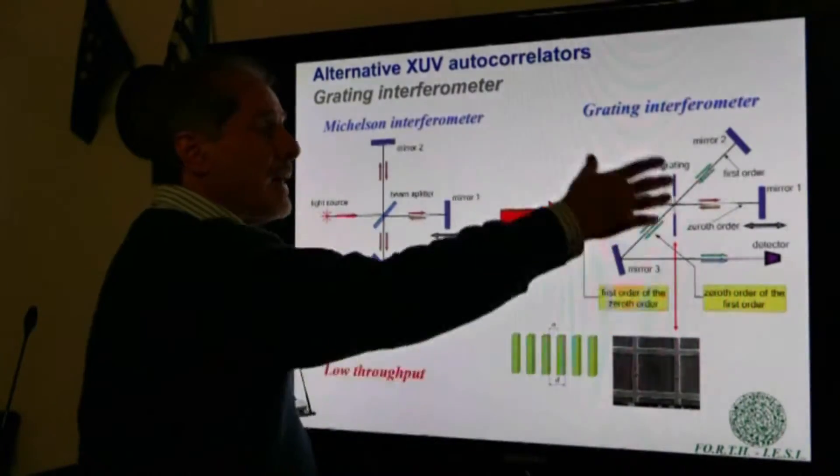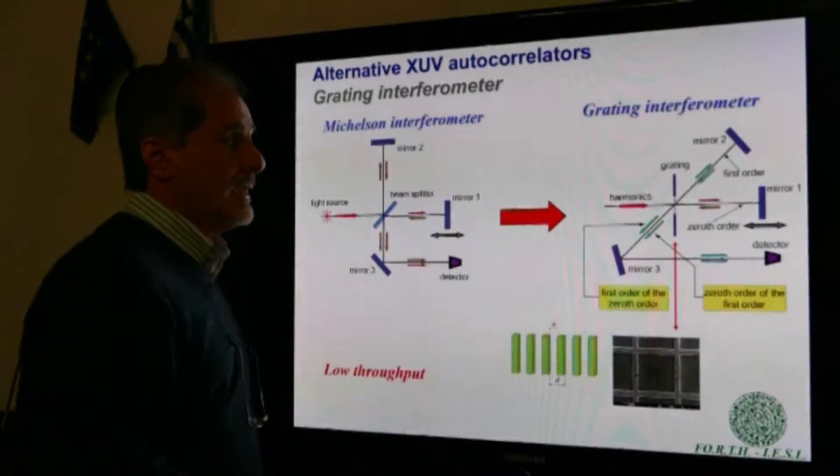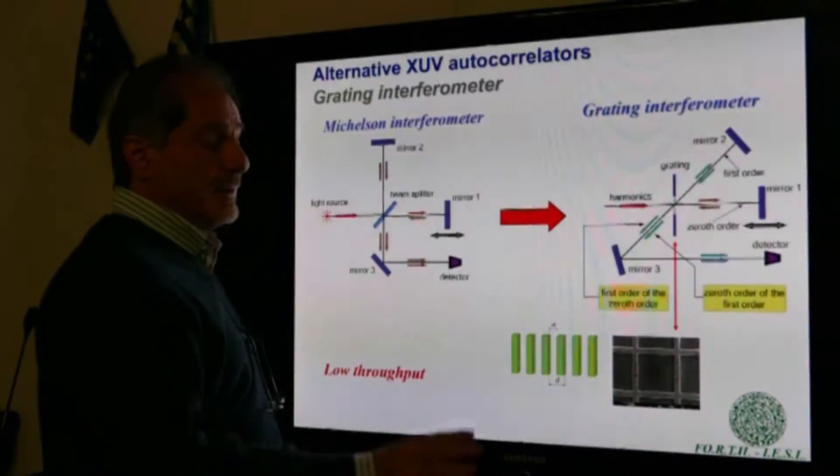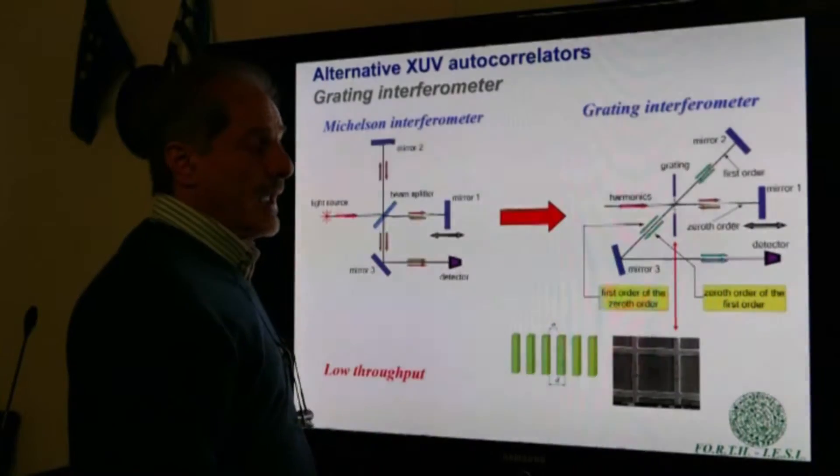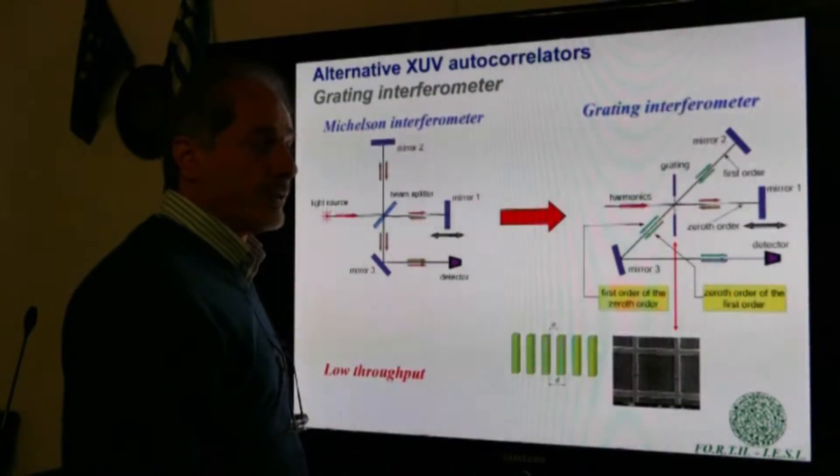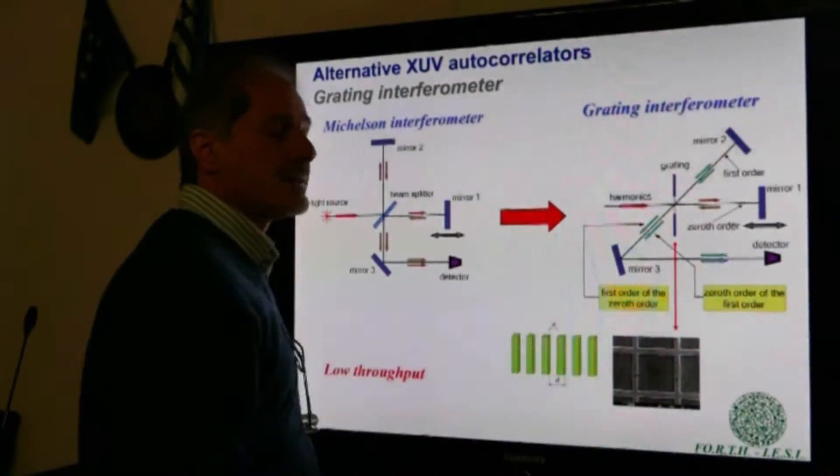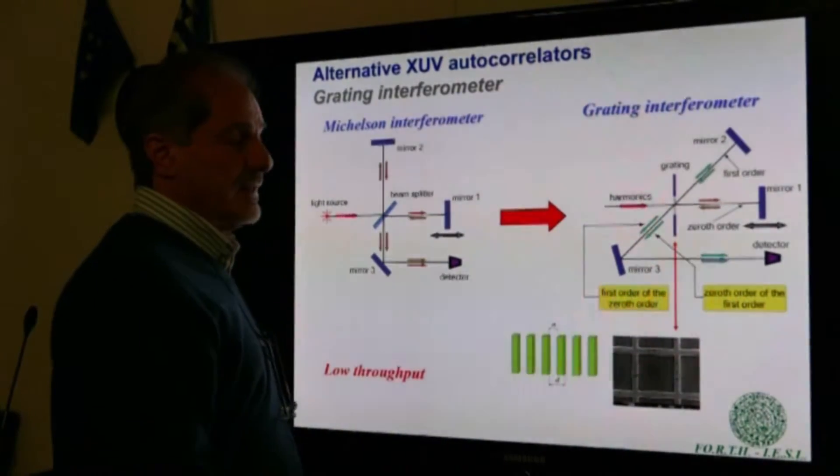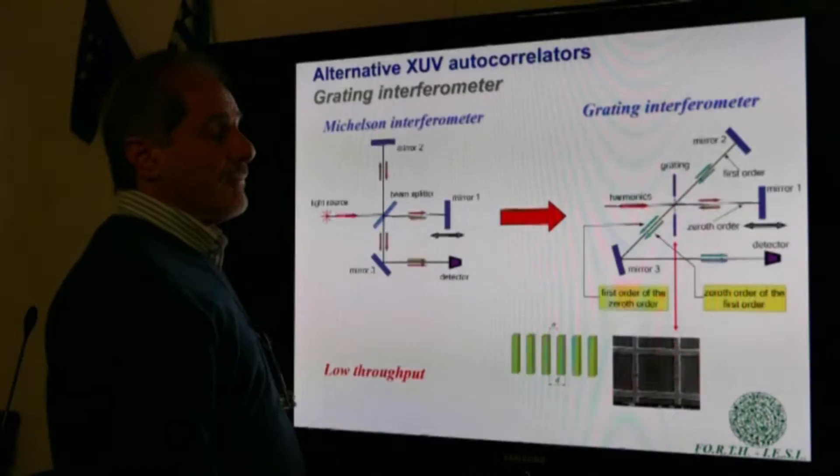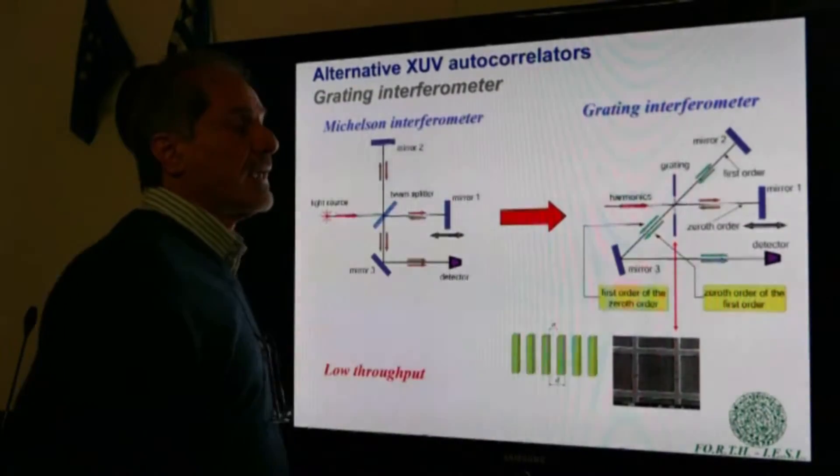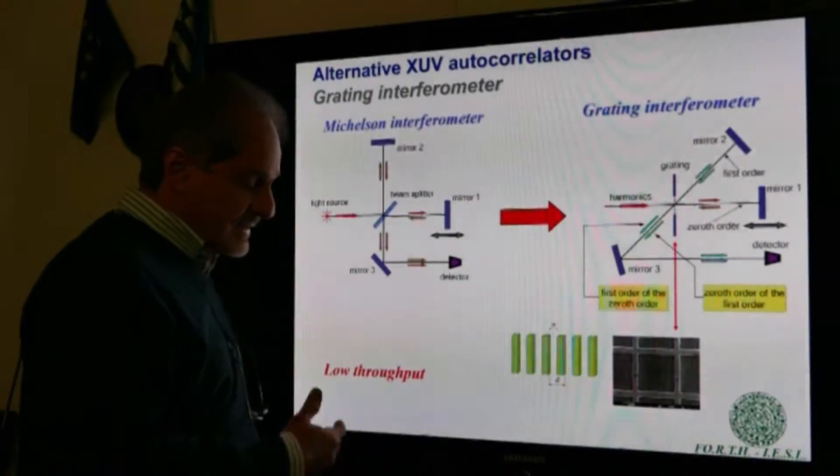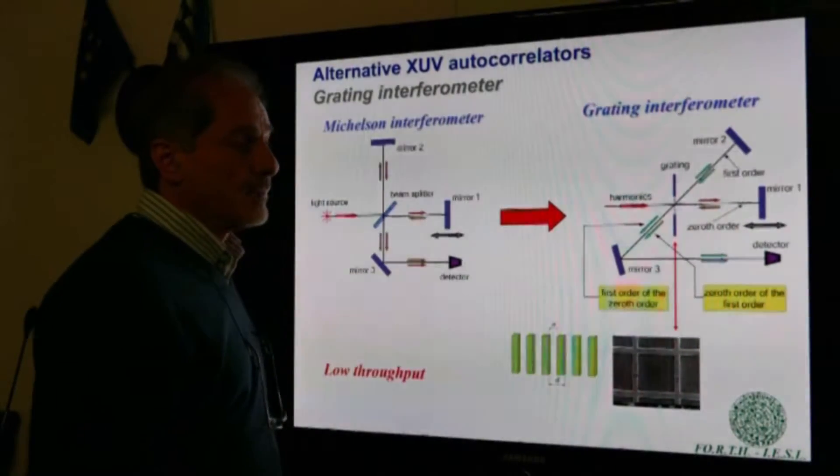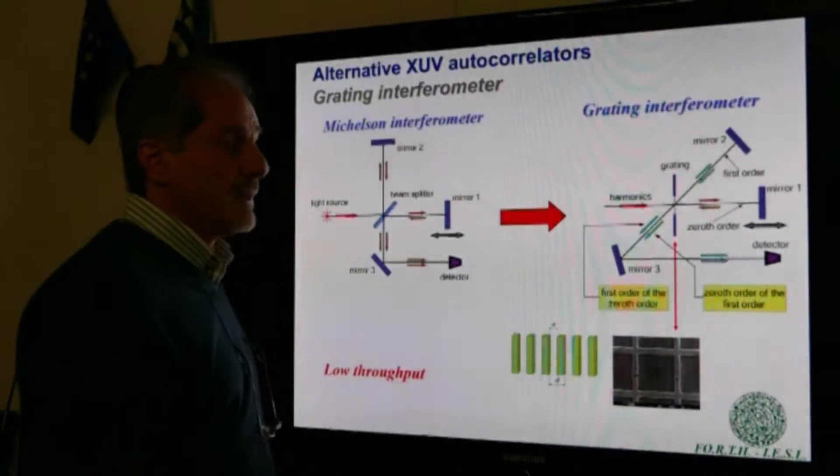The drawback of this method is that it has a very low throughput. Its diffraction reduces the energy of the XUV by one order of magnitude, and since we have two passes, we are losing two orders of magnitude in energy and thus in intensity. For this reason, and for the given intensities of XUV radiation, this method cannot be applied to high-order harmonics yet.